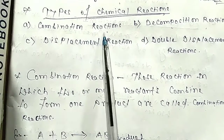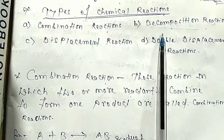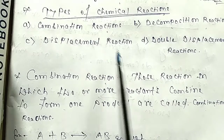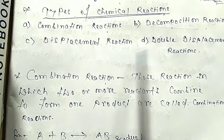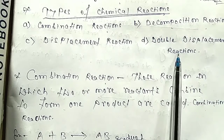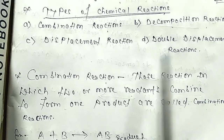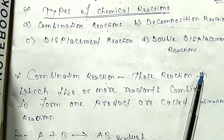There are four types of chemical reactions: first, combination reaction; second, decomposition reaction; third, displacement reaction; and fourth, double displacement reaction.